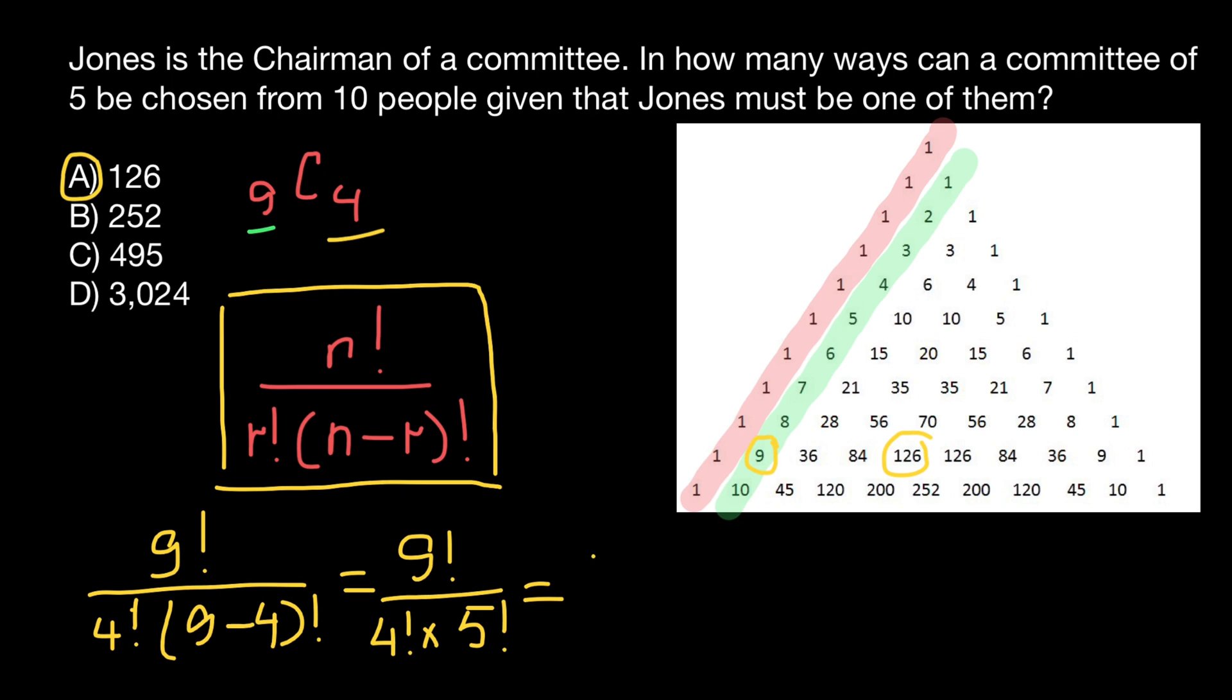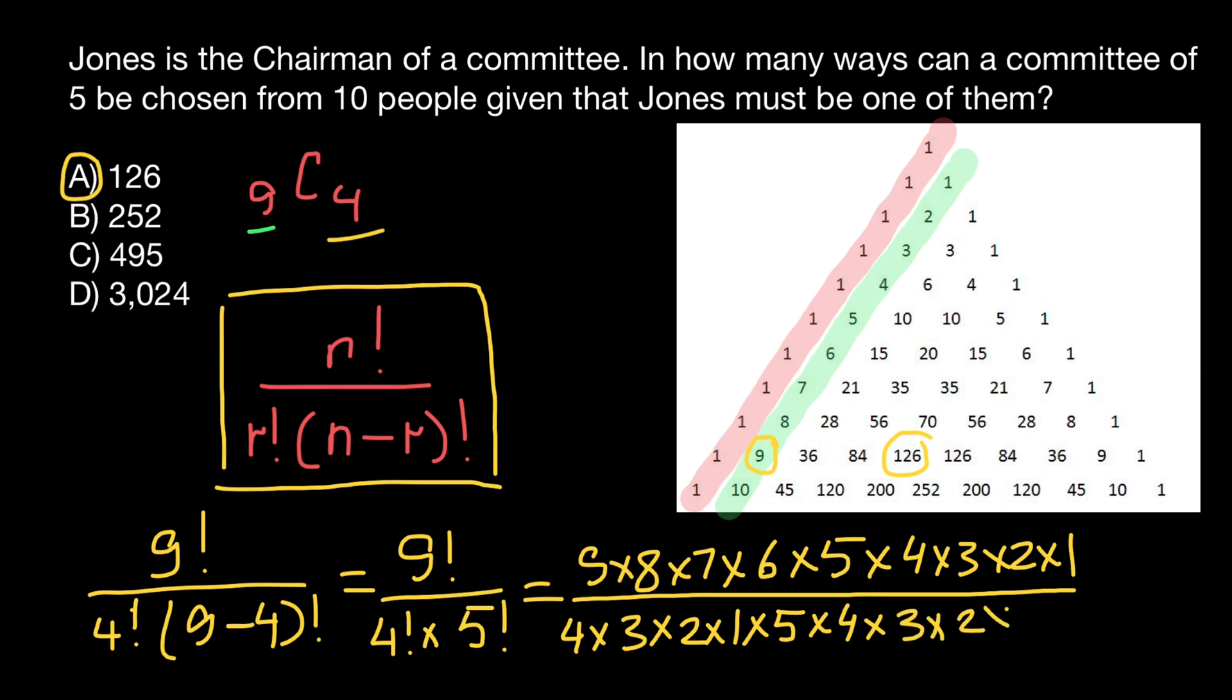Which is the same as nine times eight times seven times six times five times four times three times two times one, divided by four times three times two times one, times five times four times three times two times one. We can cross out or cancel this part on both denominator and numerator. And again, our answer is going to be 126.